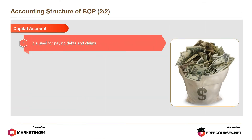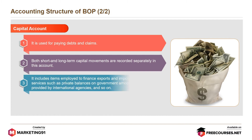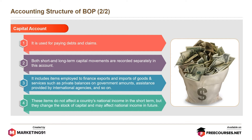The capital account is used for paying debts and claims. Both short and long term capital movements are recorded separately in this account. It includes items employed to finance exports and imports of goods and services, such as private balances, government amounts, and assistance provided by international agencies. These items do not affect a country's national income in the short term, but they change the stock of capital and may affect national income in future.